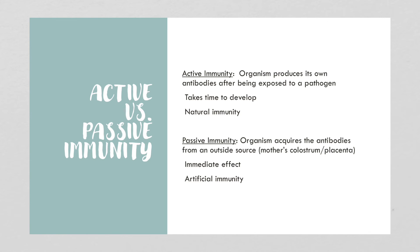Active immunity is when you make your own antibodies after being exposed to the pathogen — it takes time to develop and is considered natural immunity. Passive immunity is when antibodies are acquired from an outside source, such as antibody therapies used early in COVID-19 or plasma from recovered patients. Passive immunity also occurs through a mother's placenta and through colostrum — a fat- and antibody-rich substance produced before breast milk comes in. The effect of passive immunity is immediate and is also called artificial immunity.